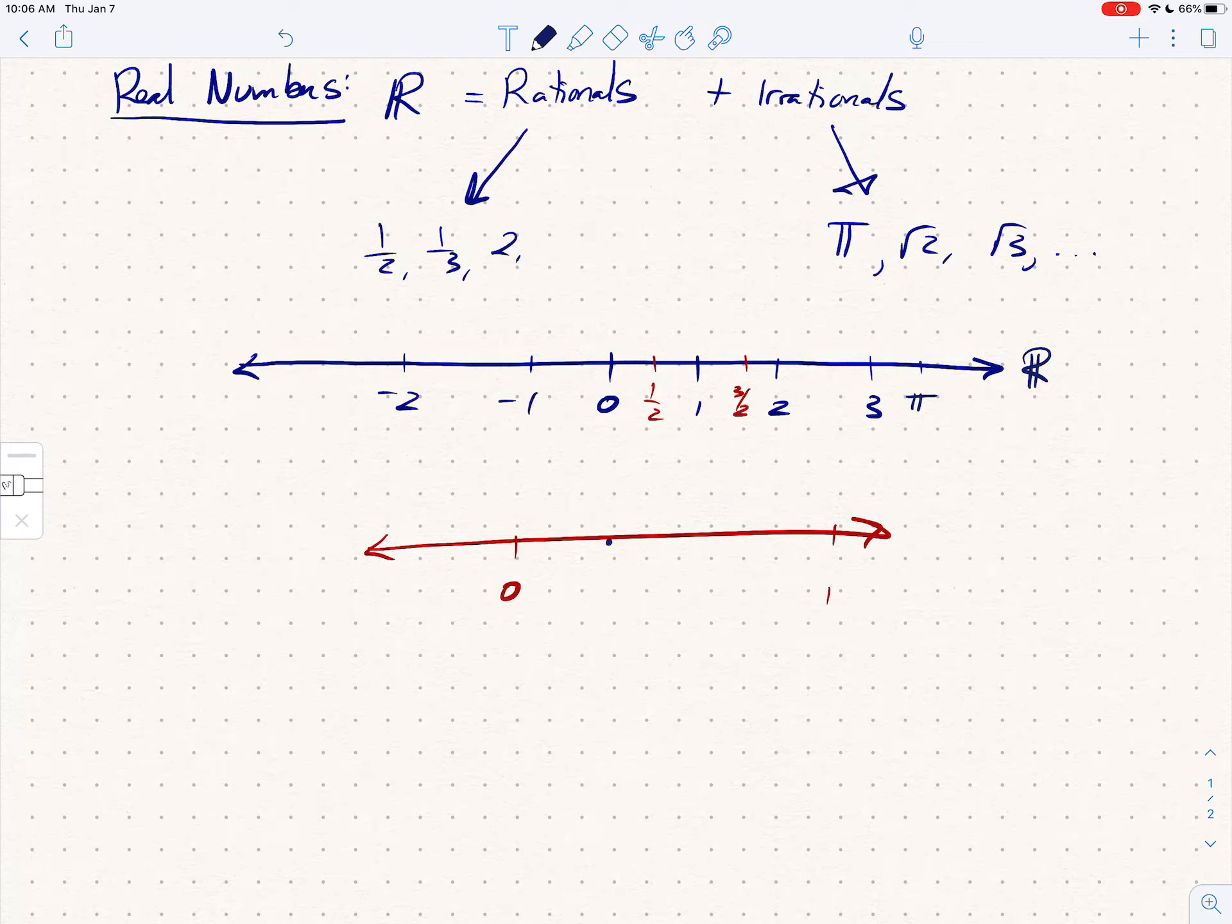You pick any two numbers you want and there are infinitely many rationals and irrationals between those two numbers. So let's stop this video here, and in the next video we will begin discussing functions.